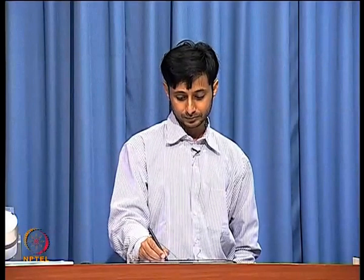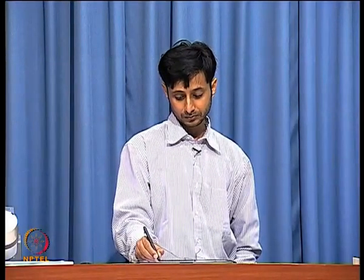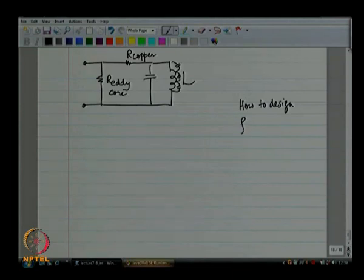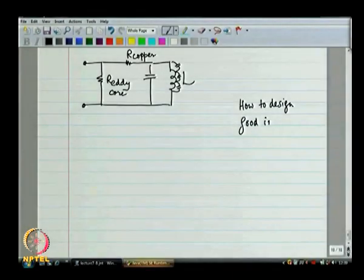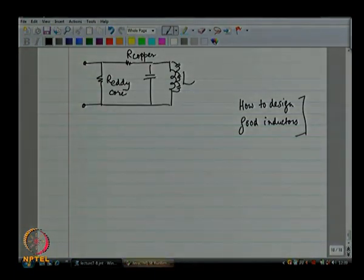There are parasitic capacitances all over the place. The final model for the inductor is going to be pretty complicated, depending on how accurately you want to model its behavior. We are going to stop here. In the next class, we will see how to design good inductors, and then move on to the next topic.